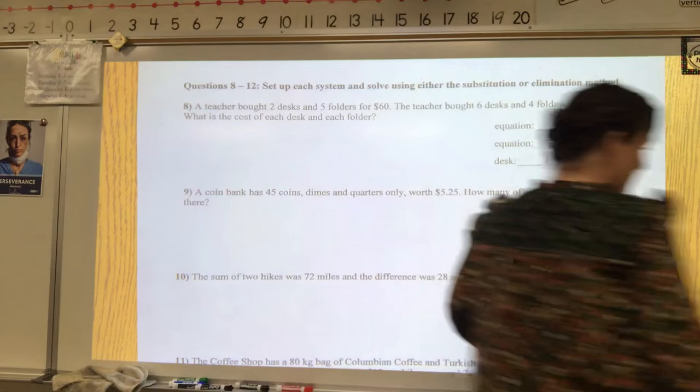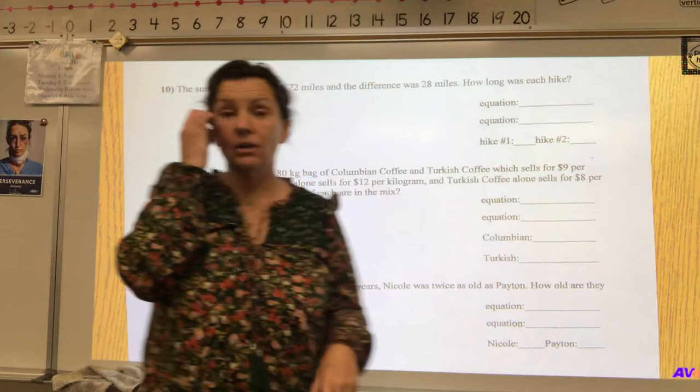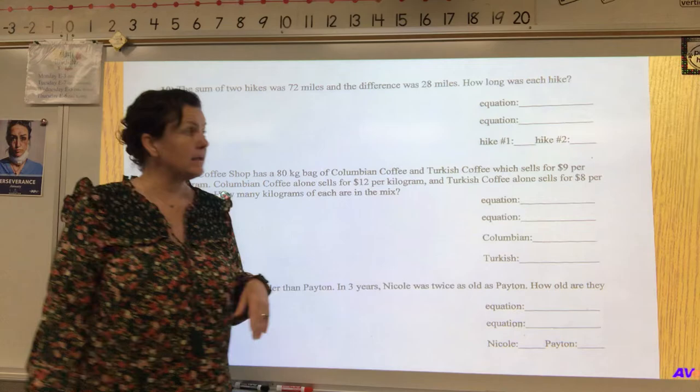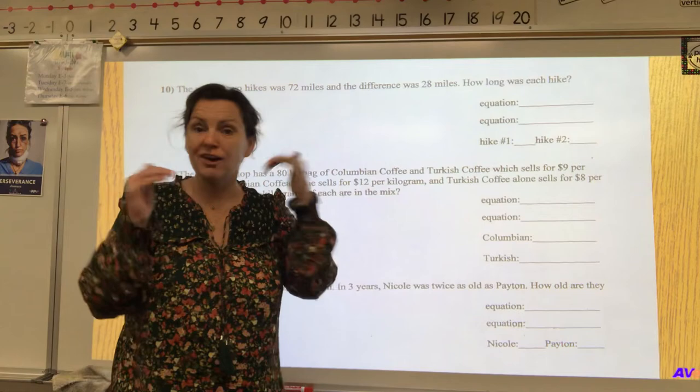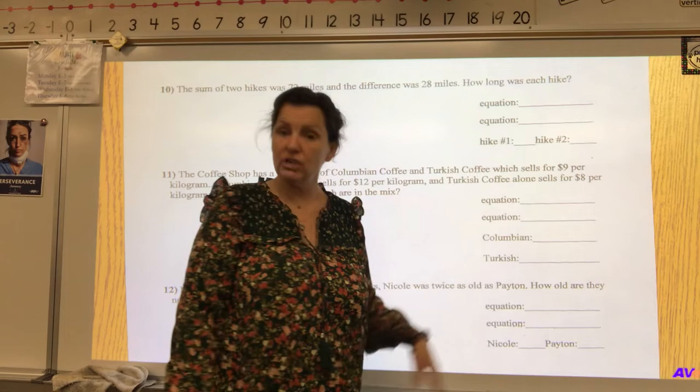We have kind of an adventure question. You went on two hikes, and what was the distance of the first hike and the second hike? Again, a 10-point question, 2.5 for each section. The next one is a mixture question. In this case, we have Colombian and Turkish coffee being mixed together. Again, a 10-point question, 2.5 for each part.